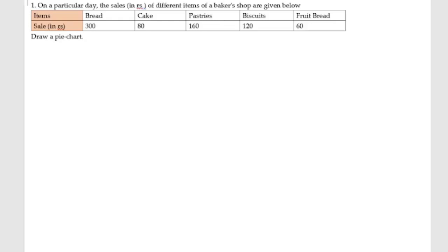Exercise number 17.3, first problem. On a particular day, the sales in rupees of different items of a baker's shop are given below. These are the items of a baker's shop like bread, cake, pastries, biscuits, fruit bread, and their sales in rupees. We need to draw a pie chart.